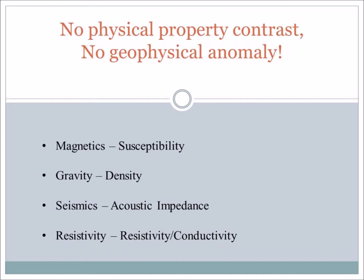Maybe there's a fracture zone with a slightly lower density. With seismics, you need a change in acoustic impedance, which can also be linked to density. And with resistivity, you need a change in resistivity or electrical conductivity. So there's no point in doing a survey in an area if there isn't a contrast.